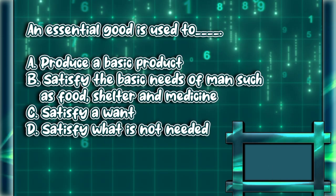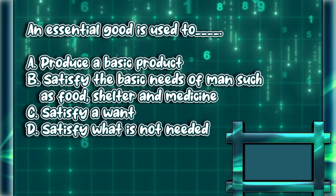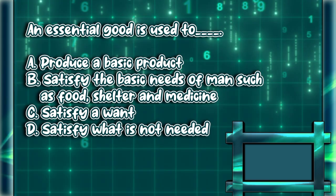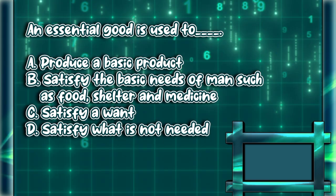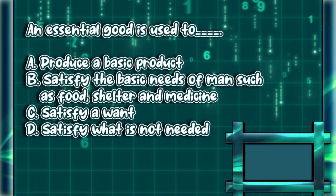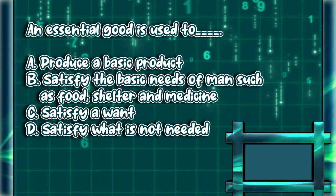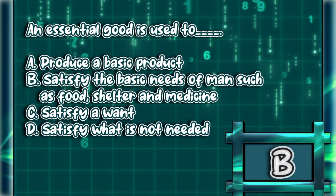An essential good is used to: A. Produce a basic product. B. Satisfy the basic needs of man such as food, shelter and medicine. C. Satisfy a want. D. Satisfy what is not needed. The answer is letter B.